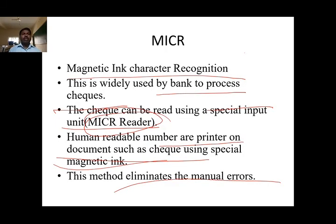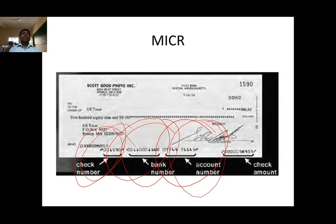MICR stands for Magnetic Ink Character Recognition. It is widely used in banks to process checks. The check can be read using a special input unit called an MICR reader. The human readable numbers are printed on the document with the help of special magnetic ink. This method eliminates manual errors and provides security. This is the MICR bank check.